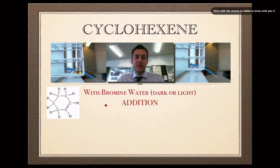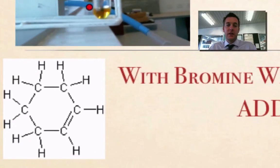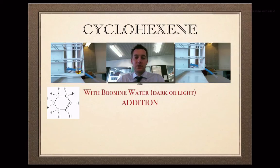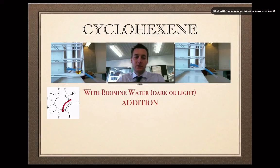Now here's an alkene reacting with bromine water — cyclohexene — and you can see that cyclohexene has a double bond, and it reacts very differently. Almost as soon as we added the bromine water to it, the colour started to fade, and after the reaction had happened very quickly, there was no colour left at all. We noticed that this reaction was happening whether it was dark or light. This is a different type of reaction, and it happens because of the unsaturated nature of our alkene — because we've got a double bond, things can react with it much more easily, and they'll add to it rather than swapping.